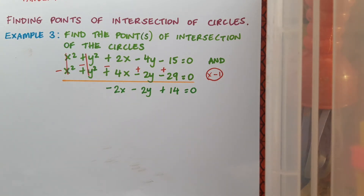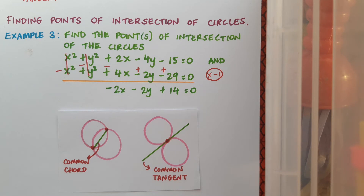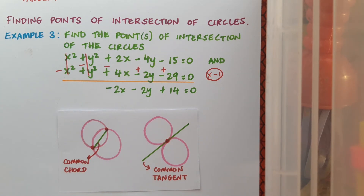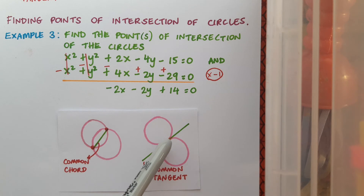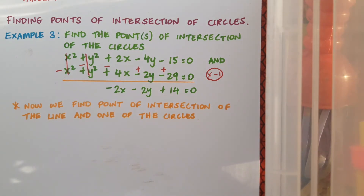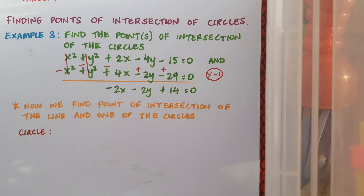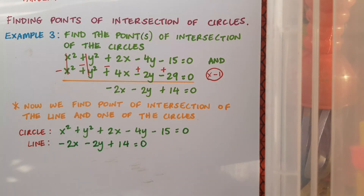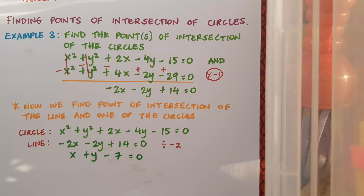I'm going to use this line equation to figure out where the circles intersect - specifically where this line intersects the circles. From the earlier diagram, if the circles meet at two places with a common chord, then where the chord intersects the circles are the same places where the circles intersect each other. Even with a common tangent, the line meets the circles at that one spot. So we find the intersection of the line with just one of the circles - we only need to do it for one because the answers will be the same either way. I'll choose the first circle, and simplify the line by dividing by -2 to make it look neater.